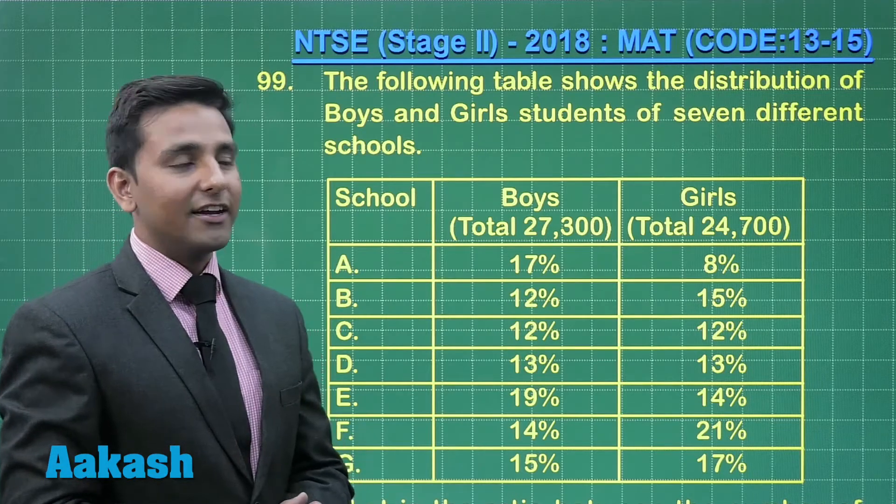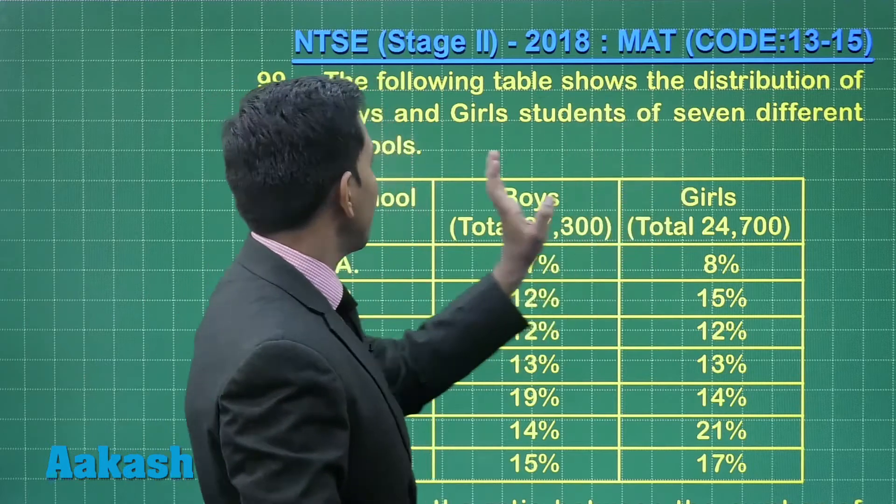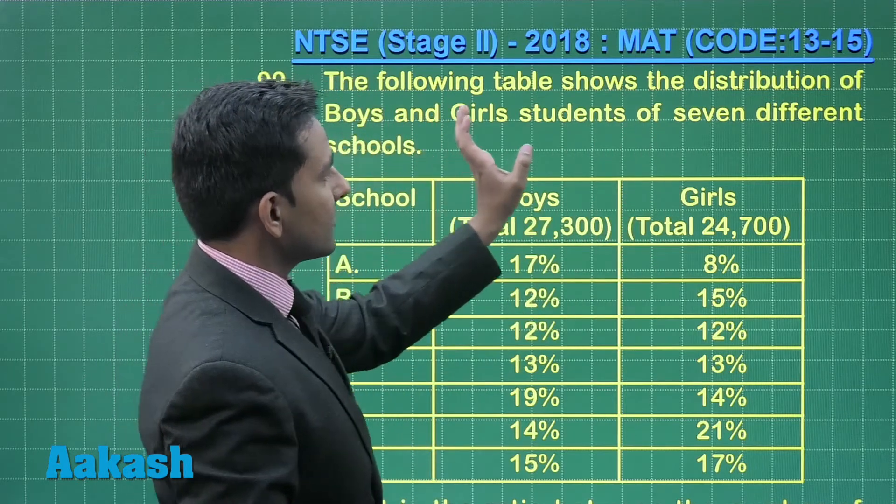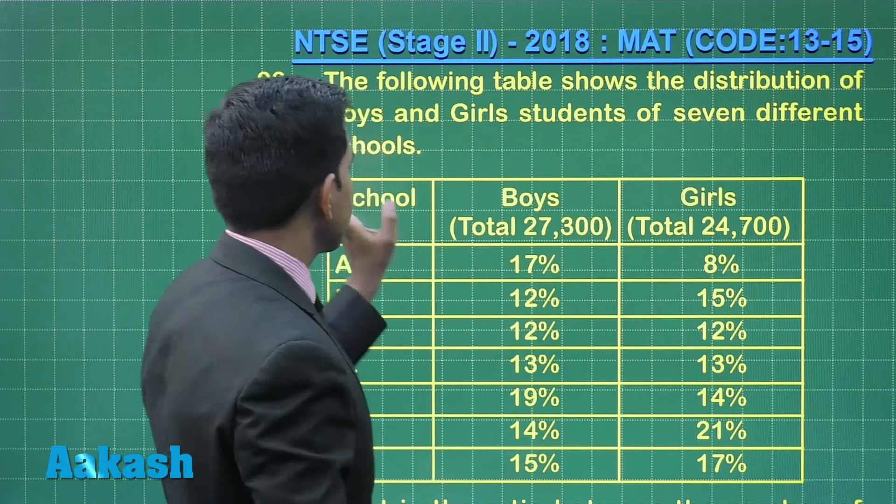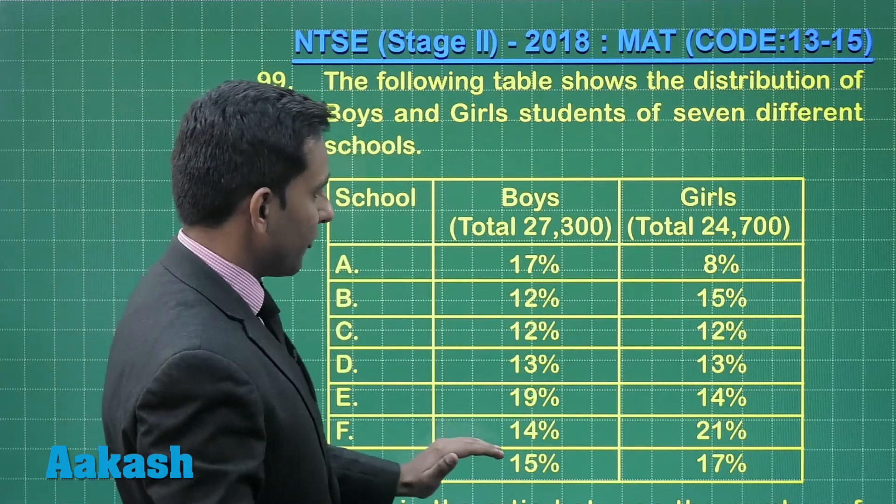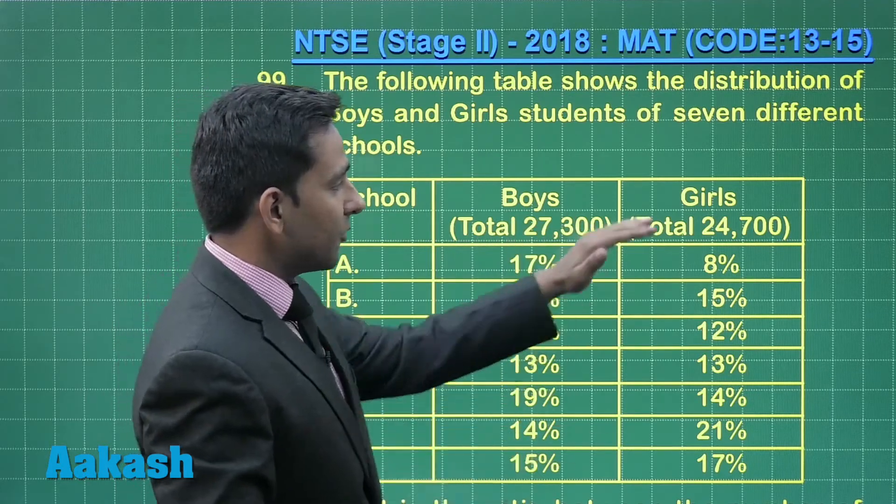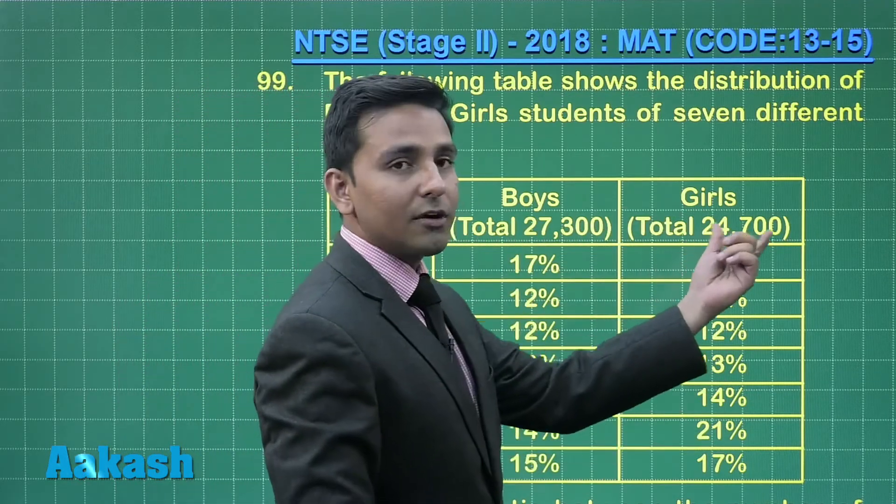Let us take question number 99. The following table shows the distribution of boys and girls students of seven different schools. Here we have the distribution with a total of 27,300 boys and 24,700 girls.